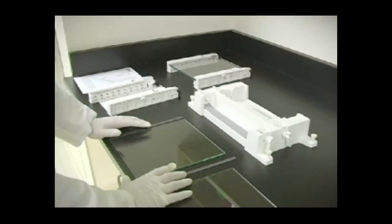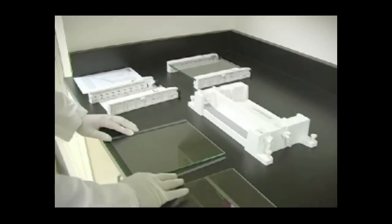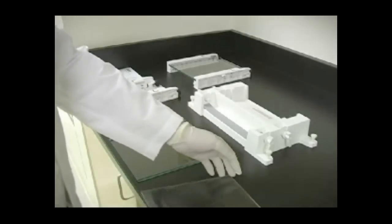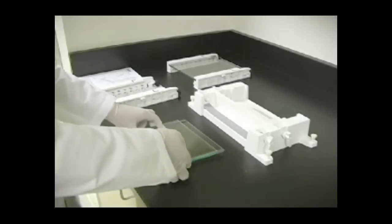To begin assembly of the gel cassettes, lay the long outer plate down. It should be 20 cm in width by 22.3 cm in length. Place narrow spacers along the long edges of the plate. Then place a short inner plate on top of the spacers. It should be 20 cm by 20 cm.